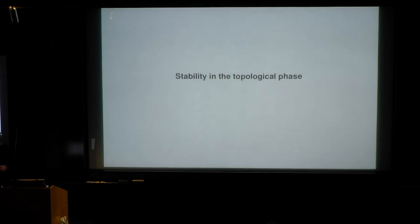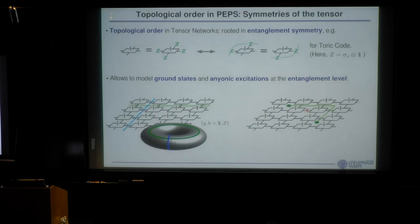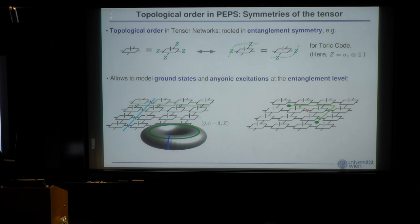To show stability in the topological phase, we will use tensor networks. The key point is that tensor networks describing topological phases like the toric code have an entanglement symmetry in the virtual degrees of freedom — this is well established. If you write down the tensor exactly, it has a symmetry in the entanglement indices. If you simulate numerically, you can show such a symmetry emerges, or enforce it without changing the state.